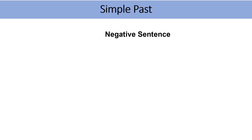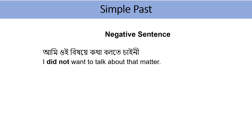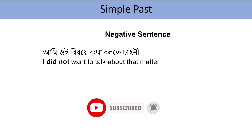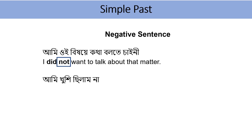Now, in simple past, how do we form negative sentences? Very simple. Suppose I want to say: আমি ওই বিষয়ে কথা বলতে চাইনি — I did not want to talk about that matter. We added 'did not'. আমি খুশি ছিলাম না — I was not happy. If positive it would be 'I was happy'; for negative, we add 'not' after the verb.